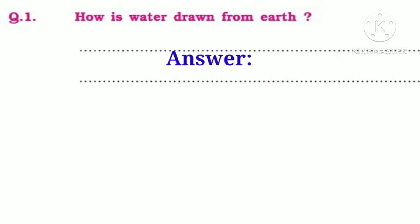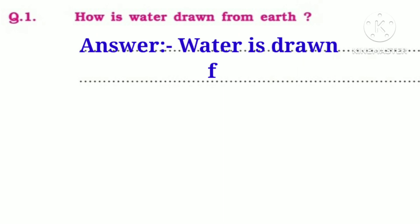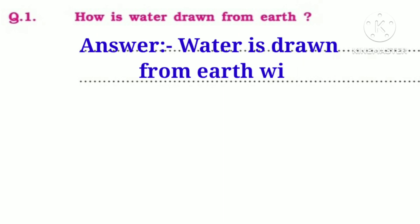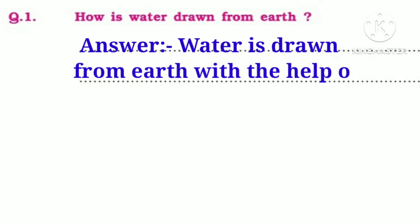How is water drawn from earth? Answer: Water is drawn from earth with the help of tube wells.